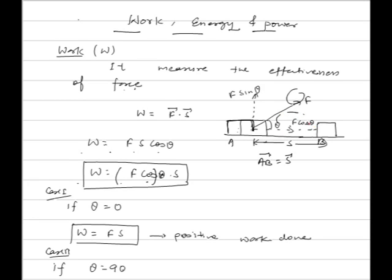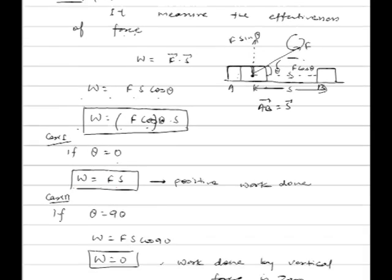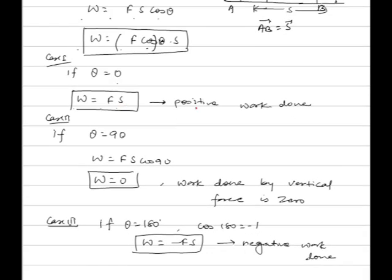Case 1: If θ equals 0, work equals F into S because cos 0 is 1, so work done is positive. Case 2: If θ equals 90 degrees, work done equals F into S cos 90. Since cos 90 is 0, work done is 0.